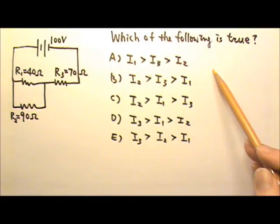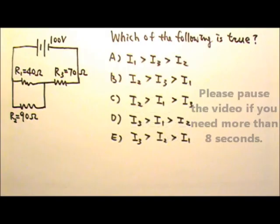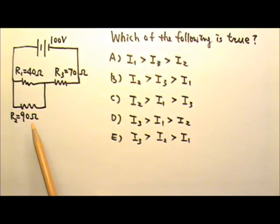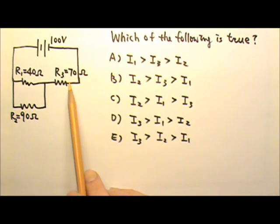For this circuit, which of the following is true? We're comparing the current in the three resistors.